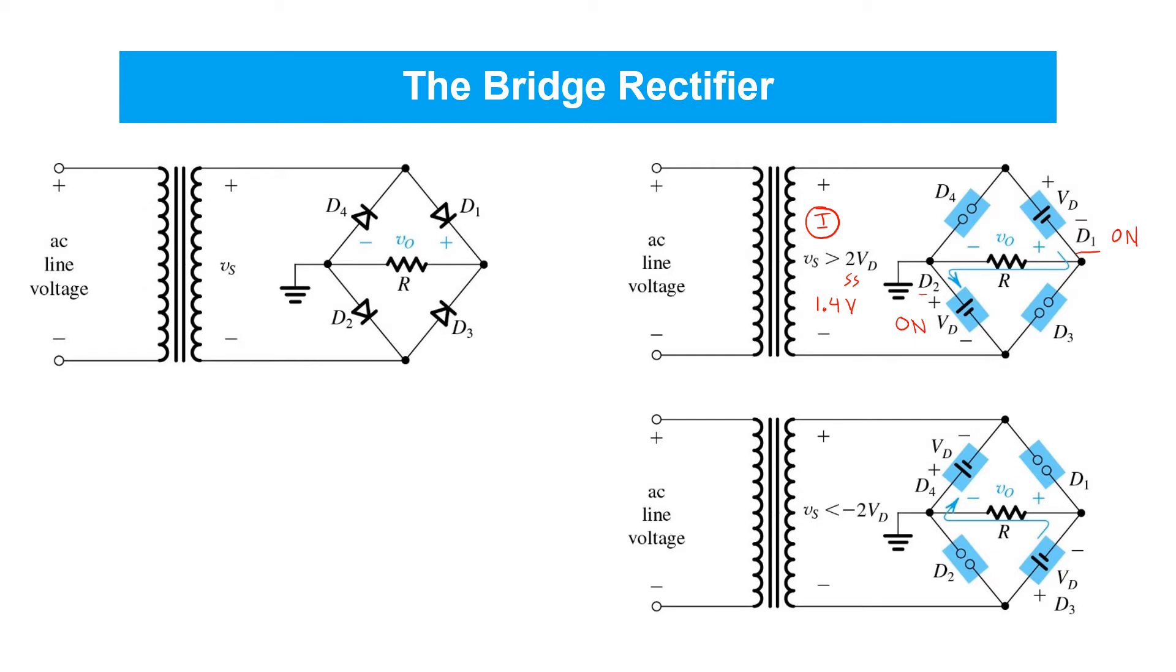On the other hand, diodes D3 and D4 are exposed to reverse bias voltages. Therefore, they're both turned off. With no current flowing through them, we can model them as simple open circuits.